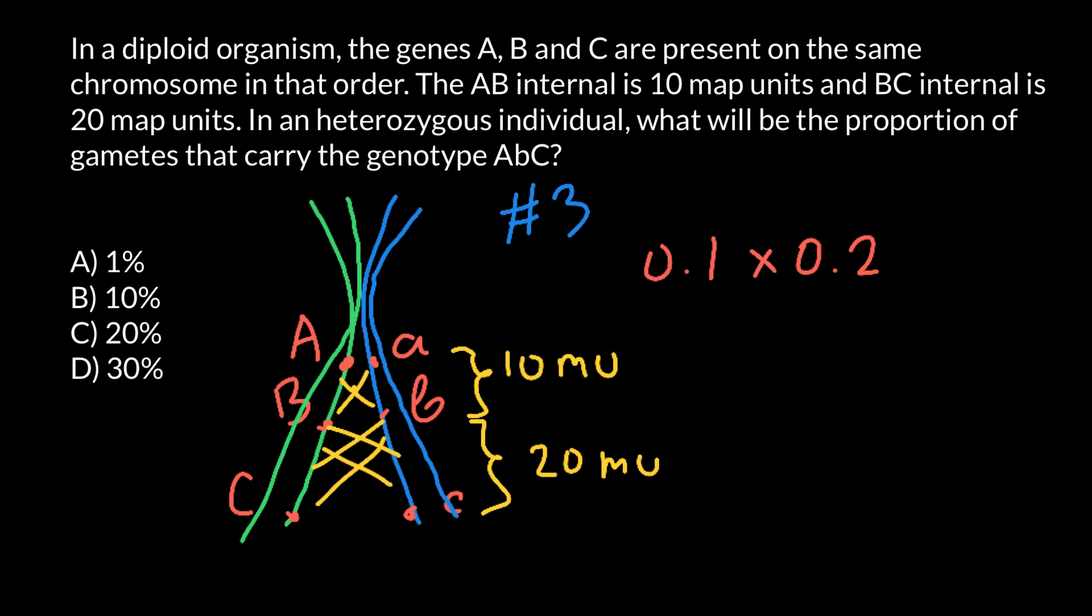This may happen with a frequency of 0.1 and 0.2. So we have to multiply these frequencies, and we are going to get a frequency of the event which is 0.02, or we can say this equals 2%. But we don't have such an answer here. Why?